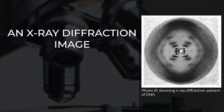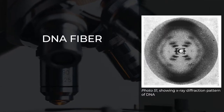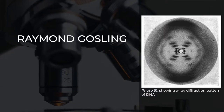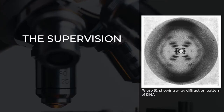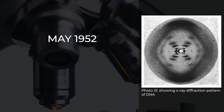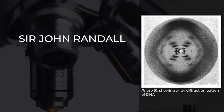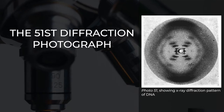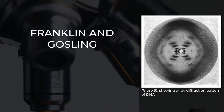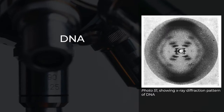Photo 51 is an x-ray diffraction image of a paracrystalline gel composed of DNA fiber, taken by Raymond Gosling, a graduate student working under the supervision of Rosalind Franklin in May 1952 at King's College London, while working in Sir John Randall's group. The image was tagged Photo 51 because it was the 51st diffraction photograph that Franklin and Gosling had taken. It was critical evidence in identifying the structure of DNA.